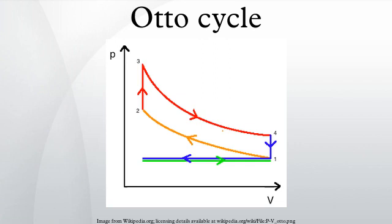The processes are described as follows. Process 0 to 1: a mass of air is drawn into the piston-cylinder arrangement at constant pressure. Process 1 to 2 is an adiabatic compression of the air as the piston moves from bottom dead center to top dead center. Process 2 to 3 is a constant volume heat transfer to the working gas from an external source while the piston is at top dead center. This process is intended to represent the ignition of the fuel-air mixture and a subsequent rapid burning.